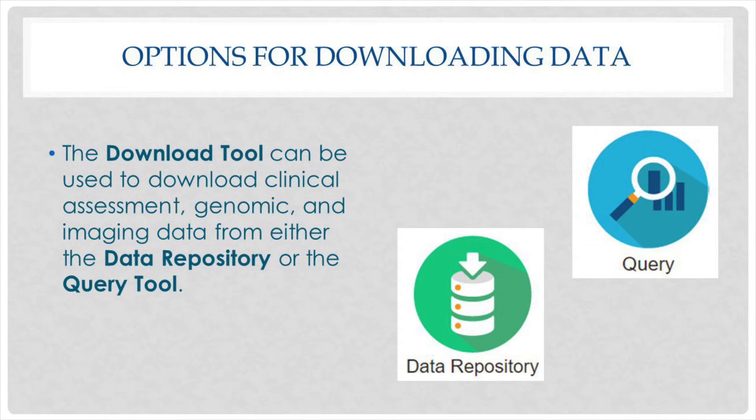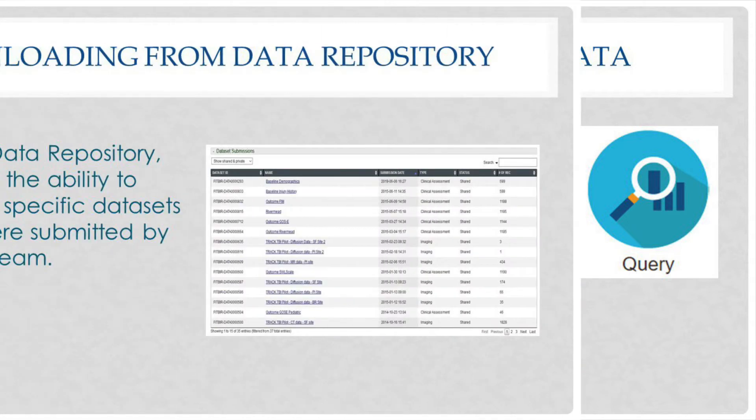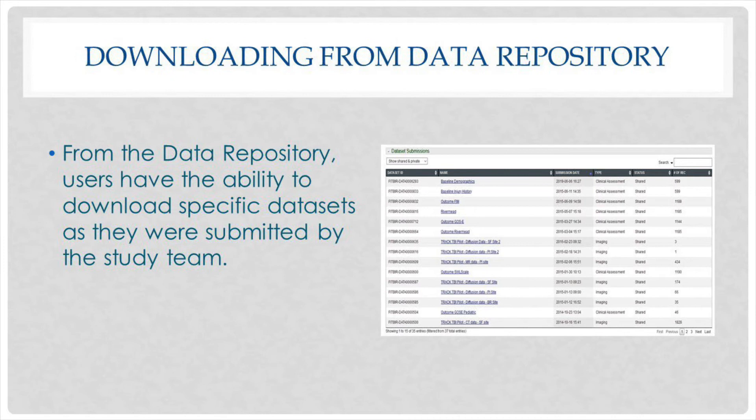As a reminder, users must first have access to the study of interest — either the study data has been shared with the Fitber community, or the user has been specifically given privileges to that study. For the first example, downloading from the data repository will be reviewed.